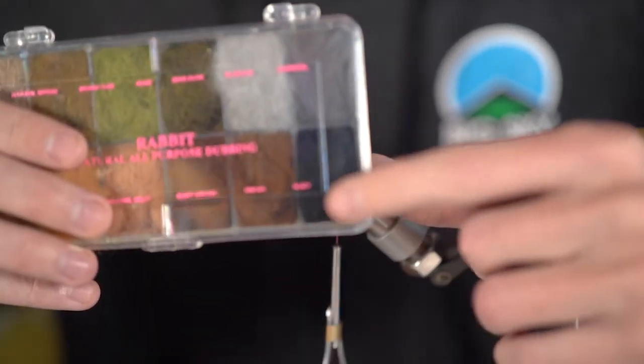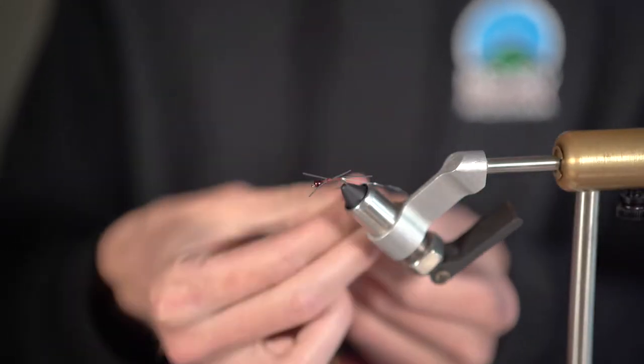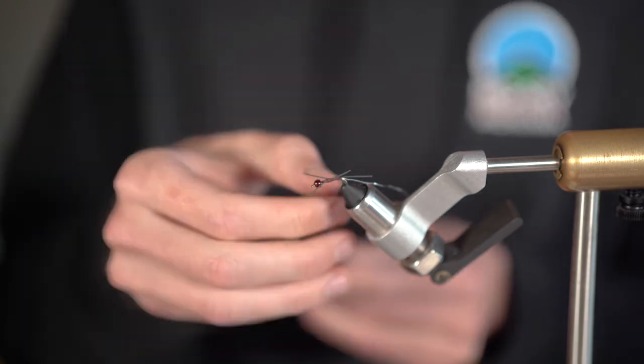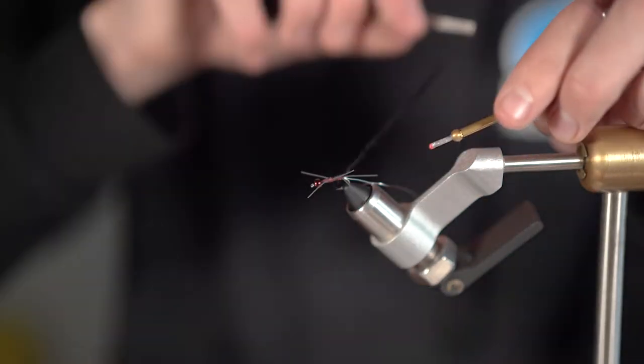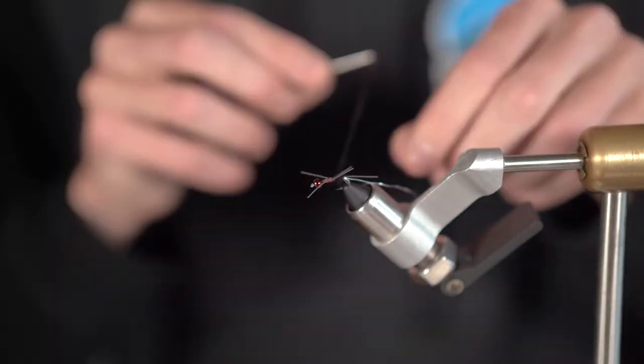Next snip off two more pieces of rubber legs in the same length as before and carefully tie those down in the middle of the shank with a few wraps then tighten down with a couple more. Make sure they are perpendicular to the curve of the hook when tying the legs in.